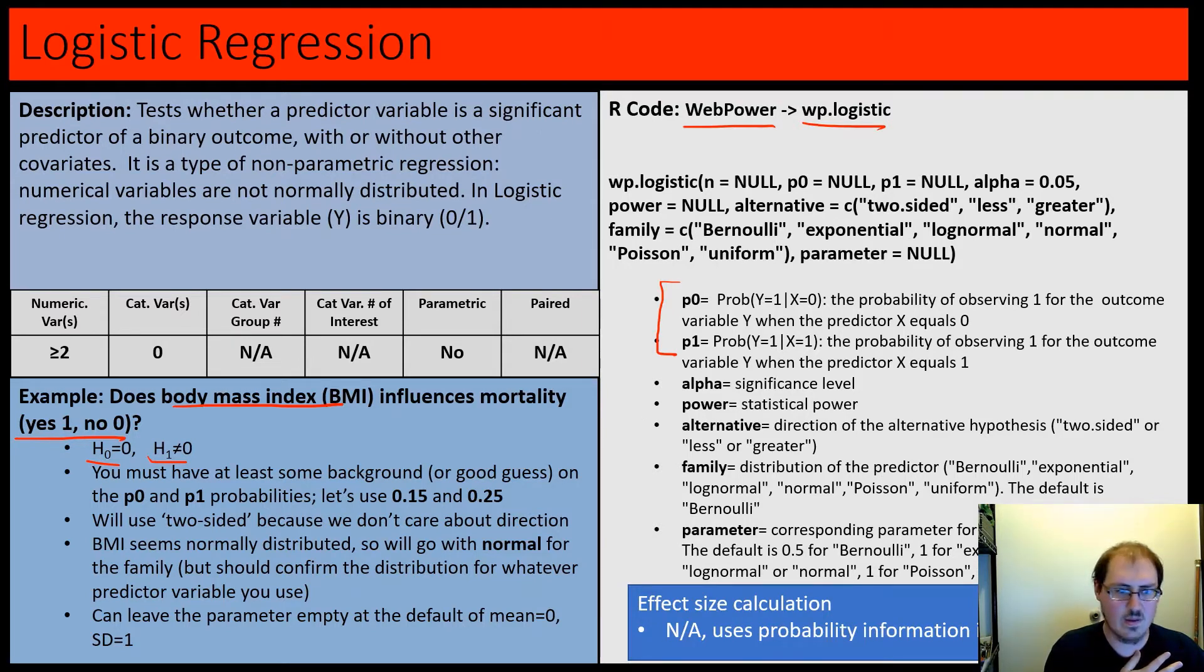You have to have at least some background or guess - kind of like effect size, we can guess on these probabilities. Another way of seeing this: if the null is true, let's say our probability of mortality at the mean body mass index value is 0.15, so there's a 15% mortality rate. But if there is an effect, maybe the mortality rate is higher - so if BMI is significantly higher than the mean, there's a higher mortality.